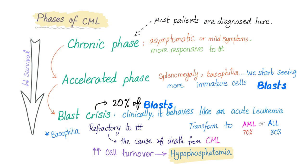Now, let's turn our attention to the phases of chronic myeloid leukemia. You have three phases: chronic phase, accelerated phase, and blast crisis.